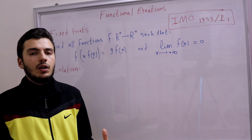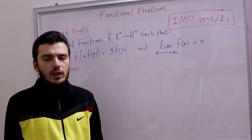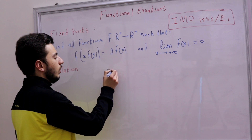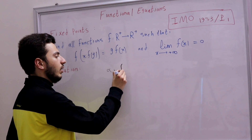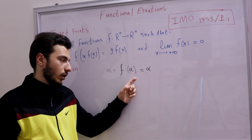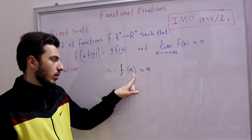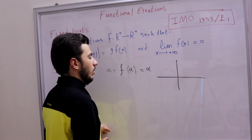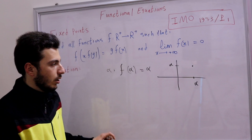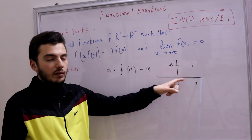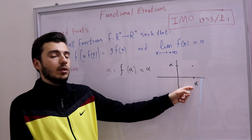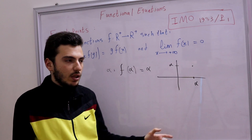First, let's talk about what a fixed point is. A fixed point is any number alpha such that f of alpha equals alpha. It's like the identity function for that exact value — the function fixes that point because the image of alpha is simply alpha itself. This is the fixed point definition, and it turns out this simple definition can solve some interesting problems, as we'll see in this video.